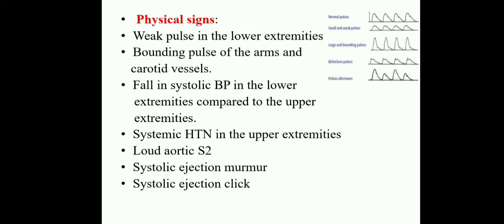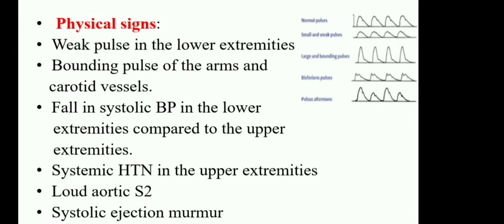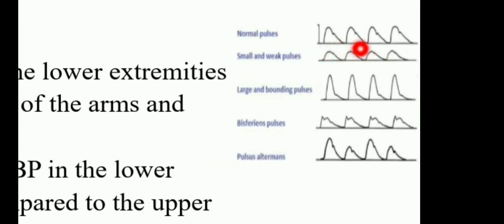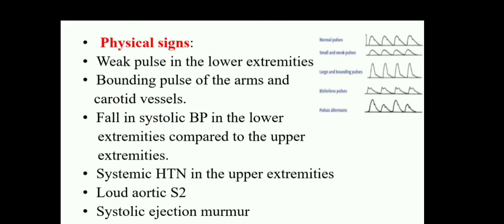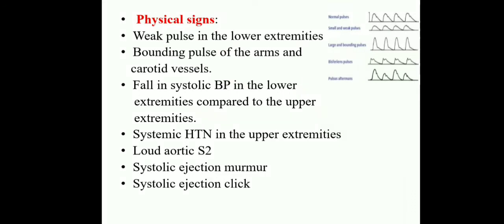Coming to the physical signs: the child has weak pulse in the lower extremities and bounding pulse of the arms and coarctate vessels. Look at this image — this is the normal pulse waveform. If it is a weak pulse, the wave is small. When there is a large bounding pulse, it moves very high and then goes very low; this variation is called a bounding pulse. We observe this in this condition. Child suffers with bounding pulse of the arms and coarctate vessels, mostly recognized in congenital heart diseases.